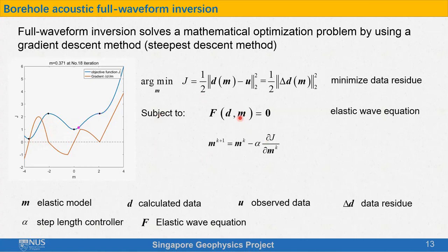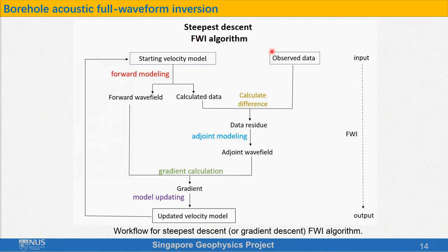From these slides, we know that FWI finds the velocity model by matching the waveforms of calculated data and observed data. Therefore, not only travel time, but all the information in the data are used. This is the reason why FWI does not have the limitation of tomography. This is the workflow of the steepest descent FWI. I am not the inventor of FWI — FWI was proposed in the 1980s for seismic velocity model building.